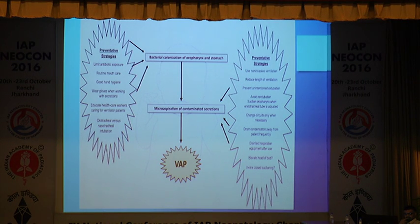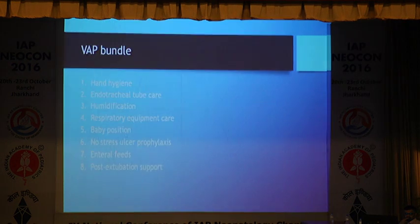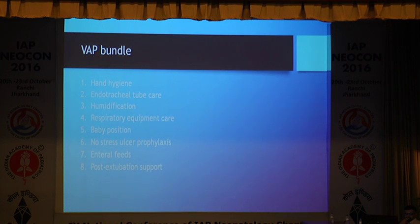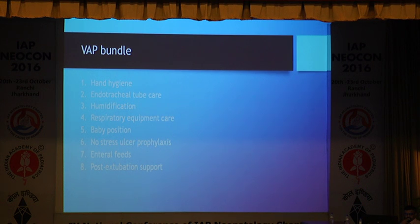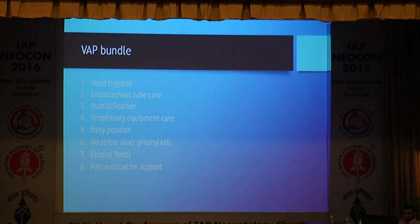Many babies are ventilated, and there is a ventilator bundle which prevents bacterial colonization of the oropharynx and stomach, and microaspiration of contaminated secretions. The ventilator bundle consists of 8 items: hand hygiene before any procedure, proper endotracheal tube care ensuring aseptic technique during suction, humidification, proper respiratory equipment care, using clean respiratory equipment, positioning the baby with the head 30 to 90 degrees higher than the lower part of the body, no use of H2 blockers or proton pump inhibitors in babies, using enteral feeds as early as possible, and finally use of CPAP or nasal IMV after extubation so the baby does not need re-intubation. If all of these are followed, one can reduce the rate of ventilator-associated pneumonia.